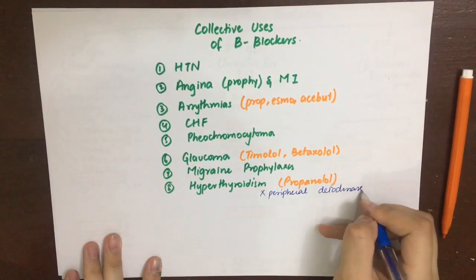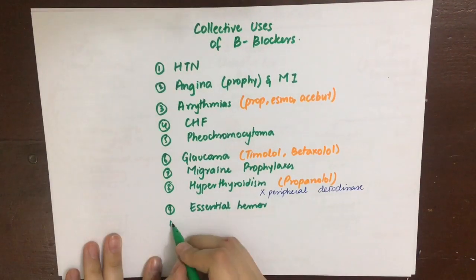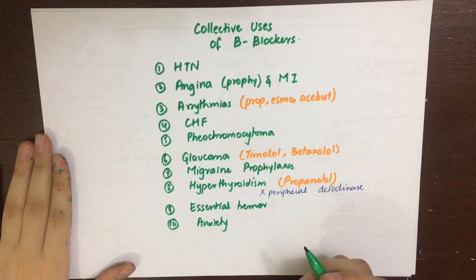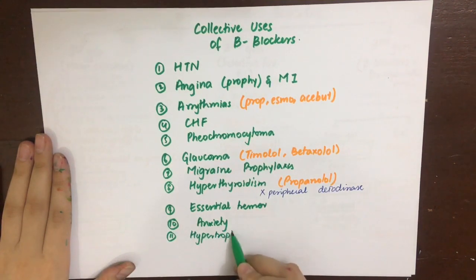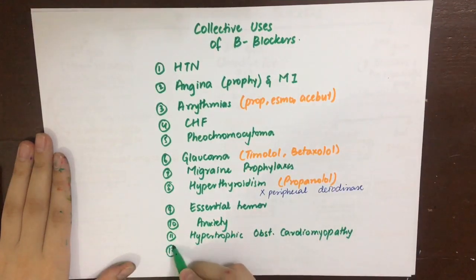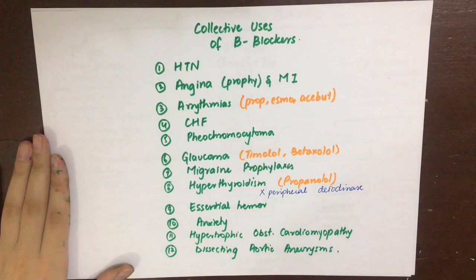Beta blockers are also used in essential tremor by inhibiting beta-2 receptors and thus glycogenolysis. They provide short-term relief of social anxiety symptoms such as tremor, palpitations, tachycardia, and sweating. They are used in hypertrophic obstructive cardiomyopathy to prevent excessive cardiac workload and muscle hypertrophy. Finally, they are used during aortic aneurysm dissection to block beta-1 activity, preventing excessive rise in systolic blood pressure to allow safe dissection. That covers sympatholytics.